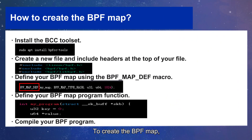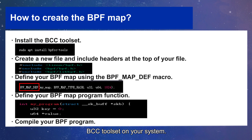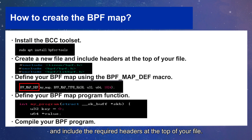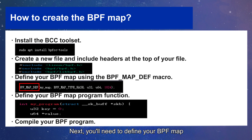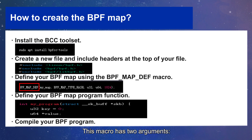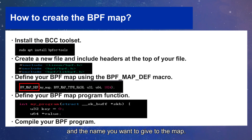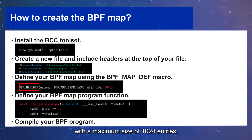To create the BPF map, you first need to install the BPF compiler collection BCC toolset on your system. Then create a new file for your BPF program and include the required headers at the top of your file. Next, you will need to define your BPF map using the BPF map def macro. This macro has two arguments: the type of map you want to create and the name you want to give to the map. The example here creates a hash map with a maximum size of 1024 entries.